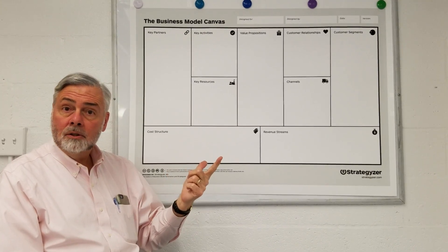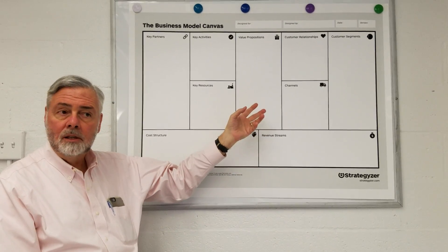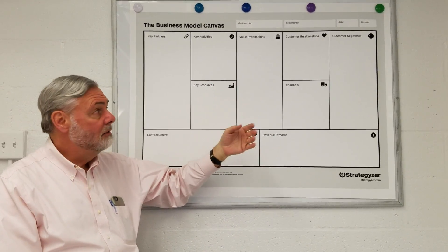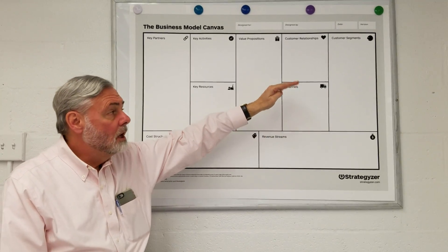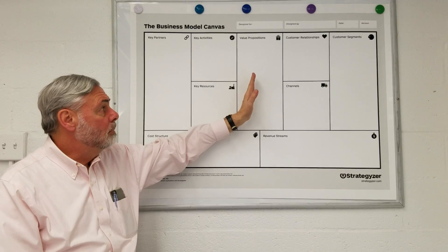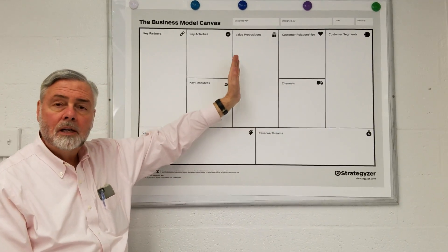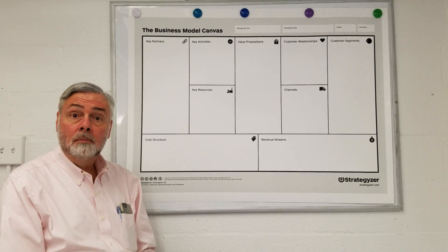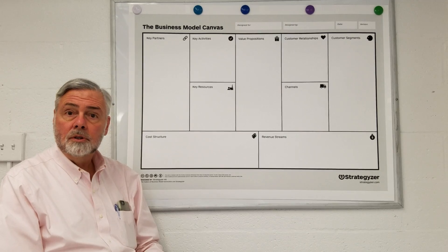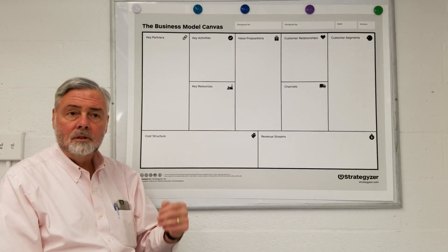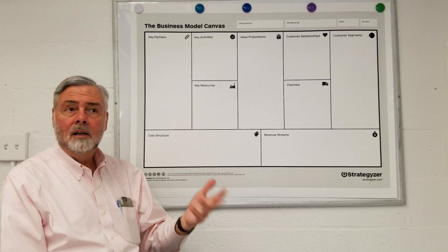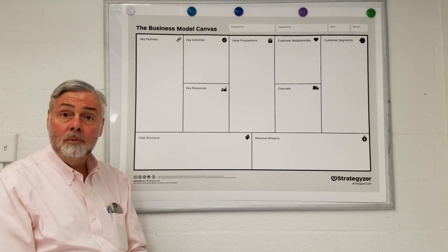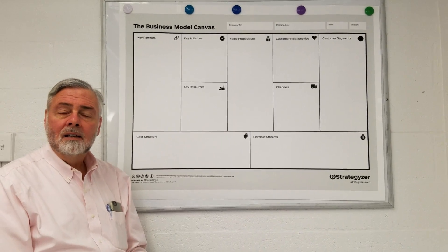There are some useful tools — the Canvanizer and Strategizer websites have nice online tools that allow you to update your canvas easily, print it, save it, and post it. They also have tools where you can color-code customer segments and carry that color code through the canvas. On our website, newventure.gwu.edu, under support resources, you'll find lots of other templates for the business model canvas — a Word document, a PowerPoint template, and an Excel spreadsheet form.